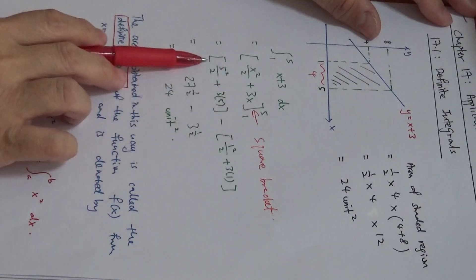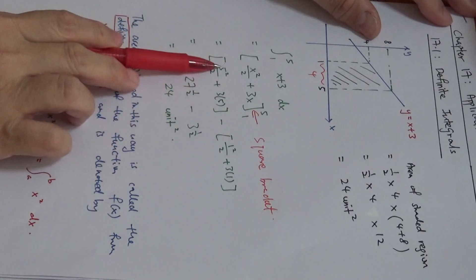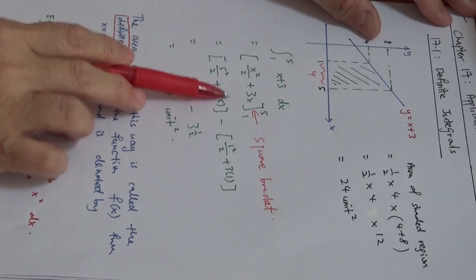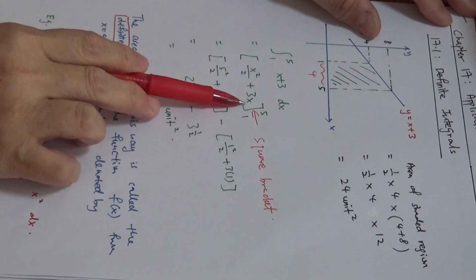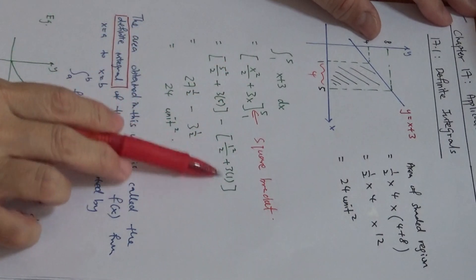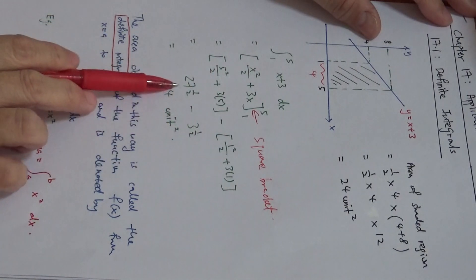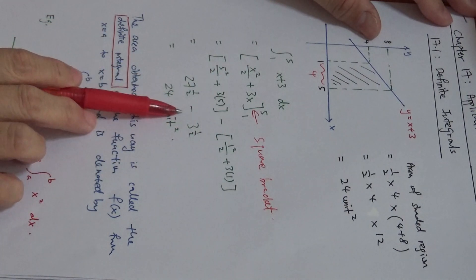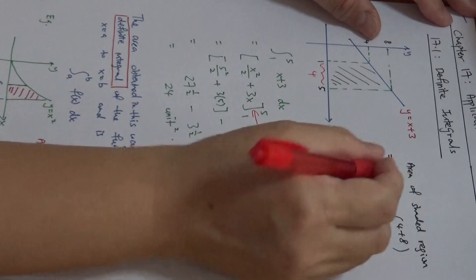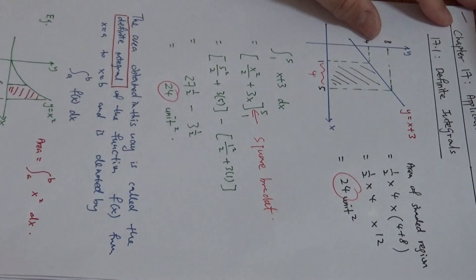After I've integrated, I put 5 in to replace x, find that answer, then minus — I put 1 in — and evaluate. After evaluating, I found that it's 27.5 minus 3.5, giving me 24. You'll realize that this 24 is actually the same as the trapezium result.